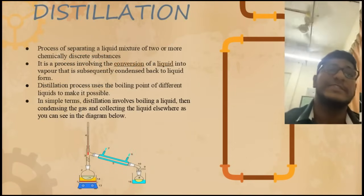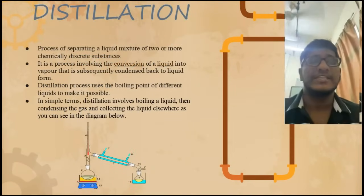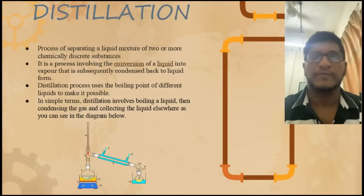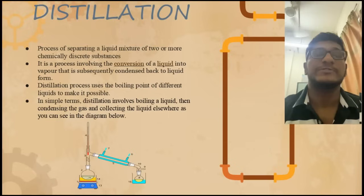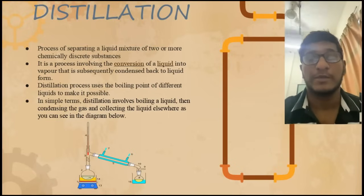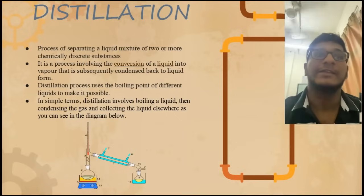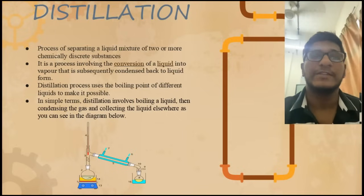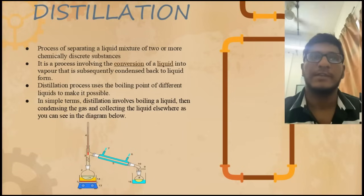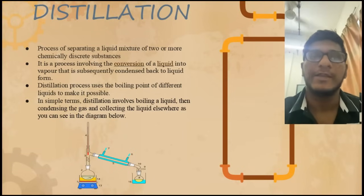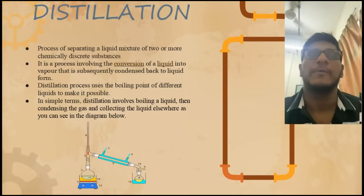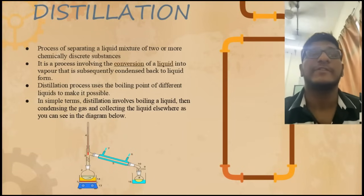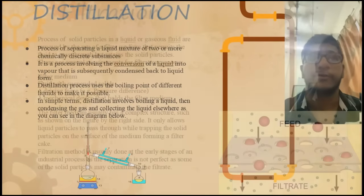First of all is distillation. Distillation is a process that uses the boiling point of different liquids to separate a liquid mixture of two or more chemically discrete substances. It is a process involving the conversion of a liquid into vapor that is subsequently condensed back to liquid form. Distillation uses the boiling point of different liquids to make it possible.